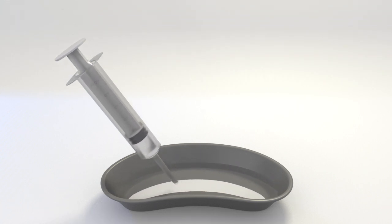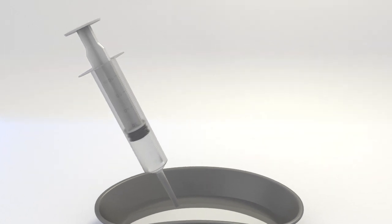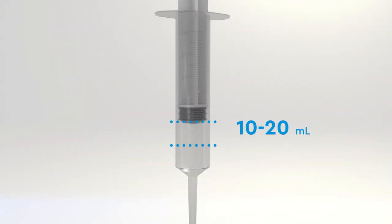Pour the warm saline into a small basin, then draw up 10 to 20 milliliters using your catheter tip syringe.